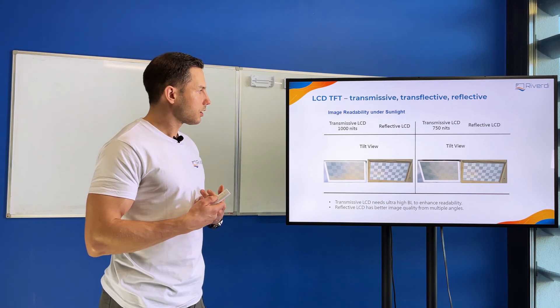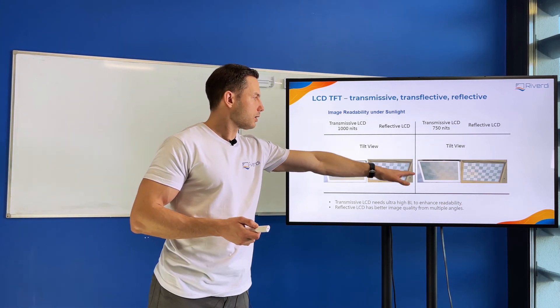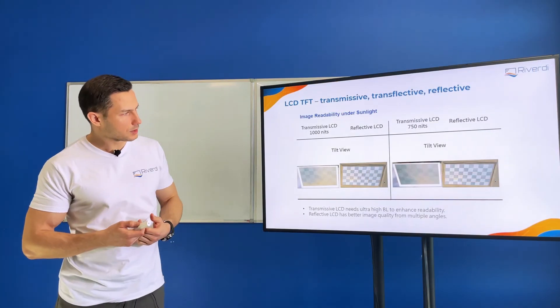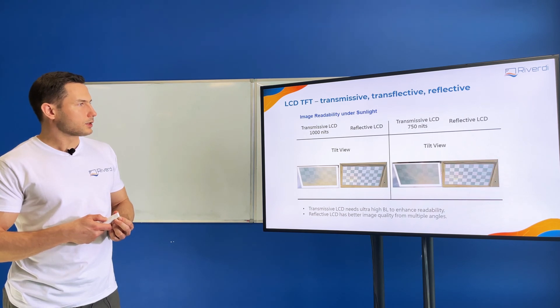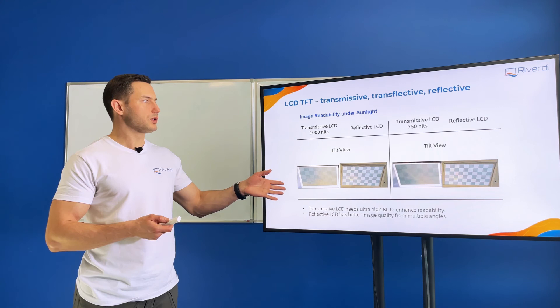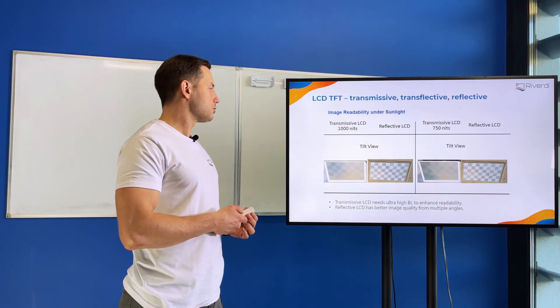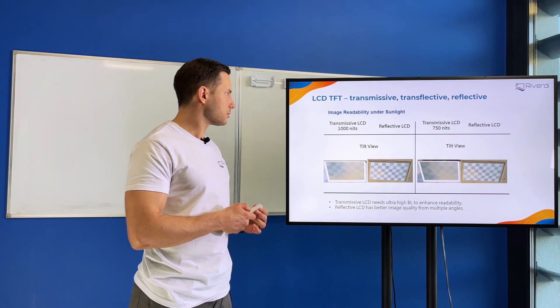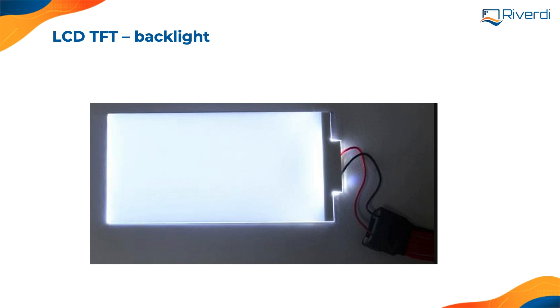With lower brightness the image is even worse. Transmissive LCDs need really high backlight, 1000 nits and more, to be really seen outdoors. Here we have just to show you how it's built, so here we have the LCD structure.